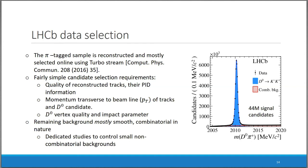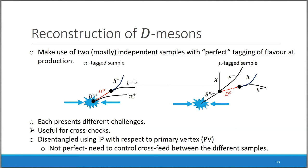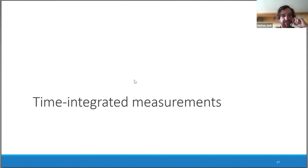Question about prospects for charm baryon decays, particularly Λc: Response: Yes, we do have searches for CP violation in charm baryons ongoing, though I unfortunately didn't do full justice to the time-integrated measurements in this talk — that would have made staying on time even worse. We are working on searches for CP violation in charm baryons as well.